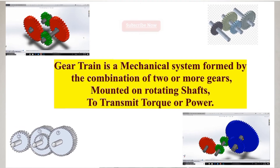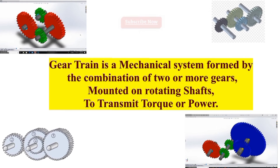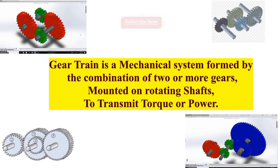Now we have to understand what is a gear train and what is the purpose of using a gear train. A gear train is a mechanical system formed by the combination of two or more gears, mounted and rotating together to transmit torque or power.